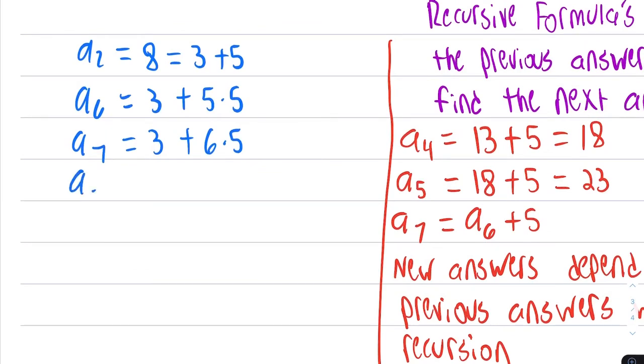To find A8, we would have taken 3, and added on to it 7 times 5. Can we see the pattern here? Maybe if I change this first one, you'll see it even more clearly.